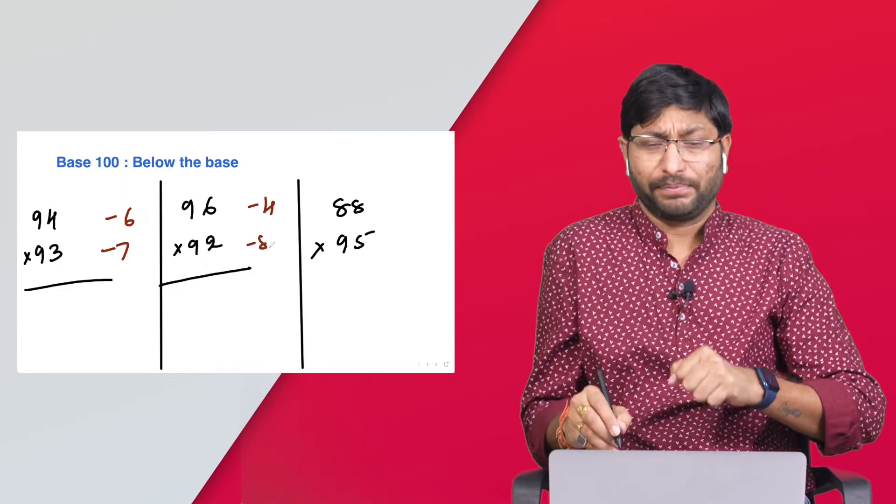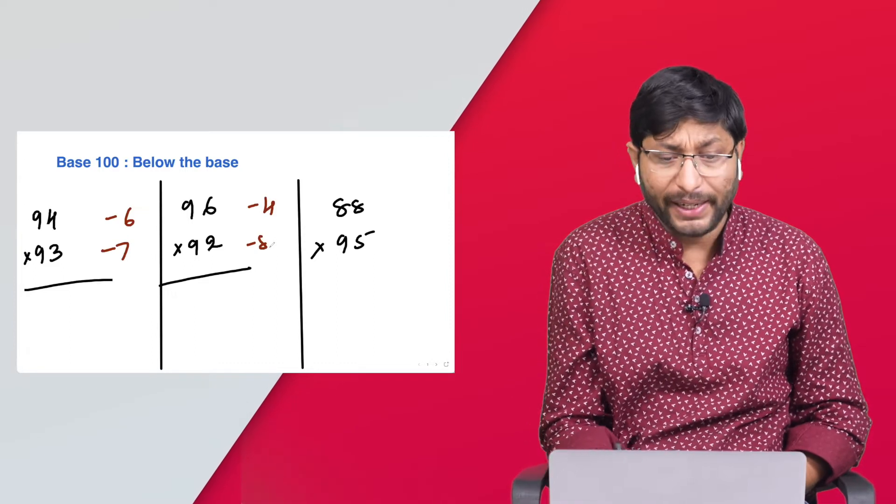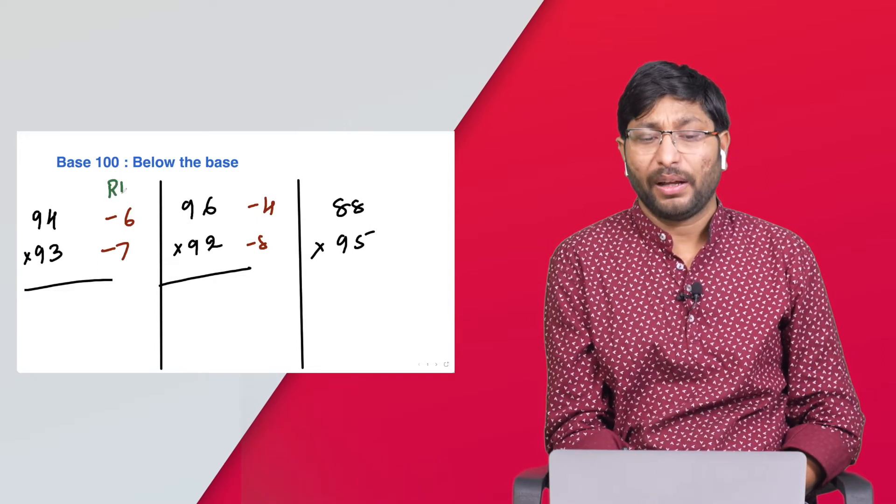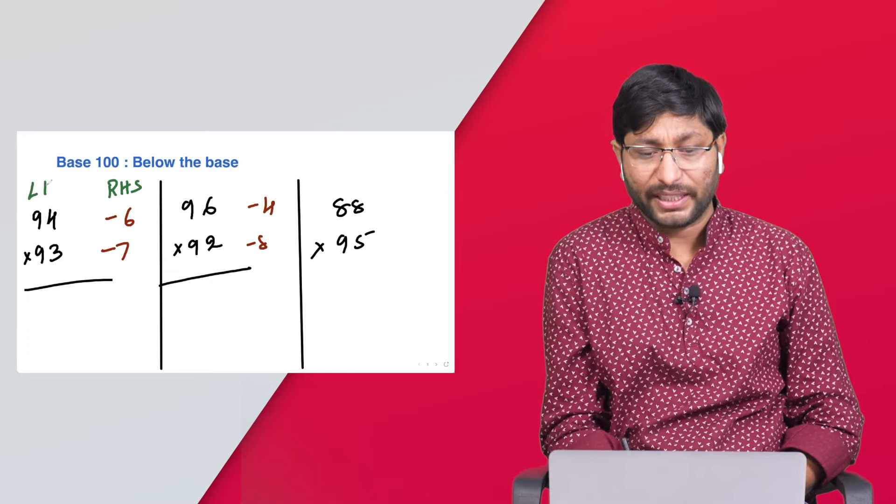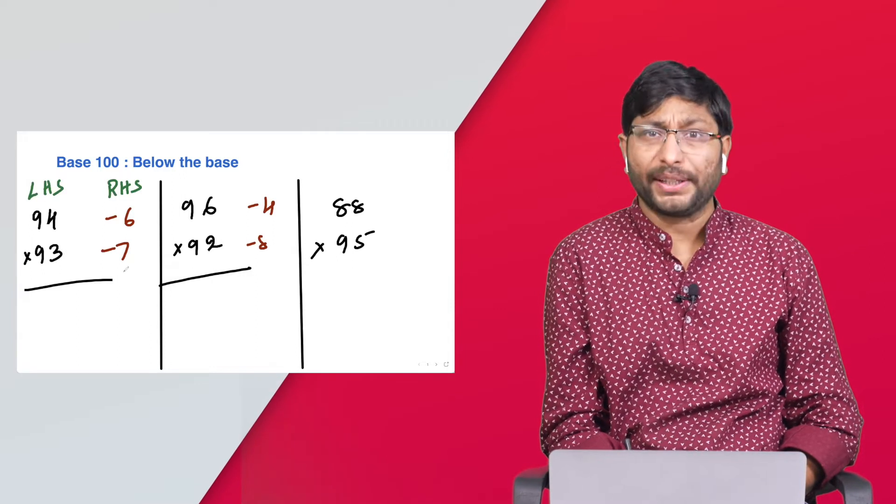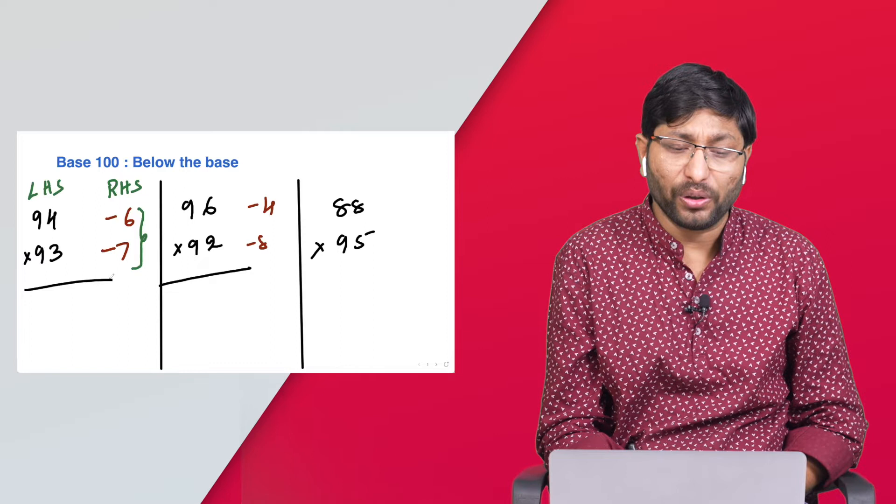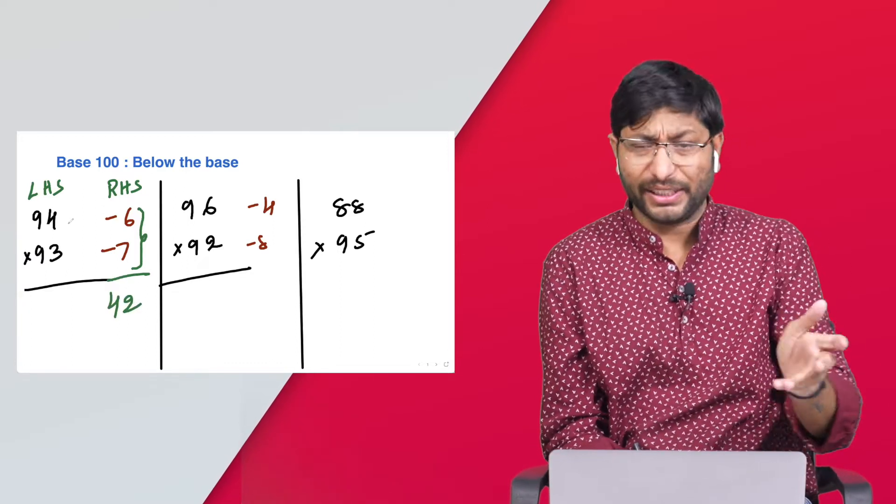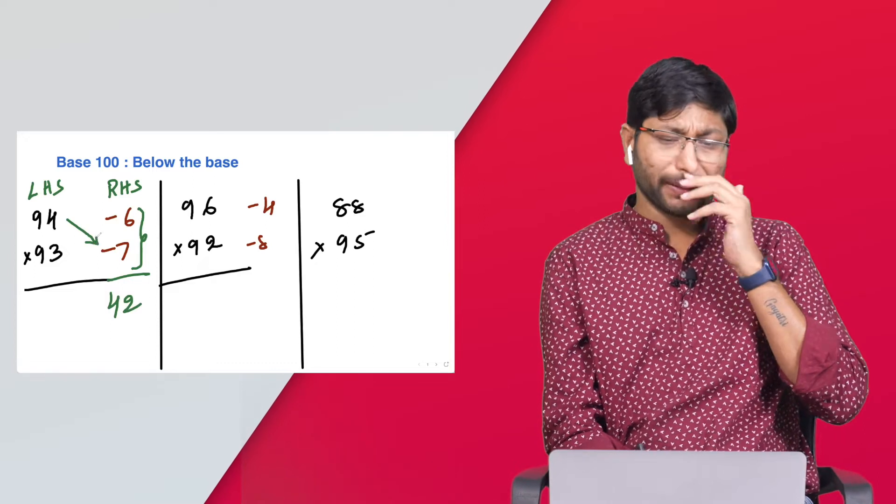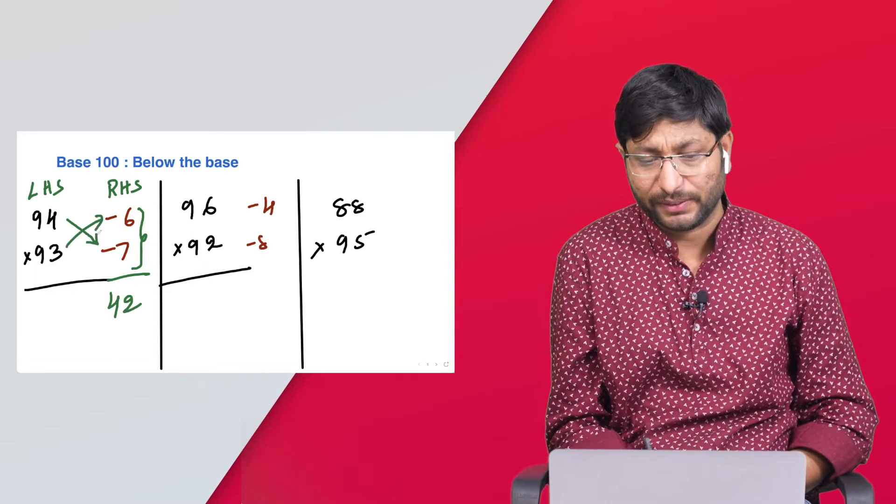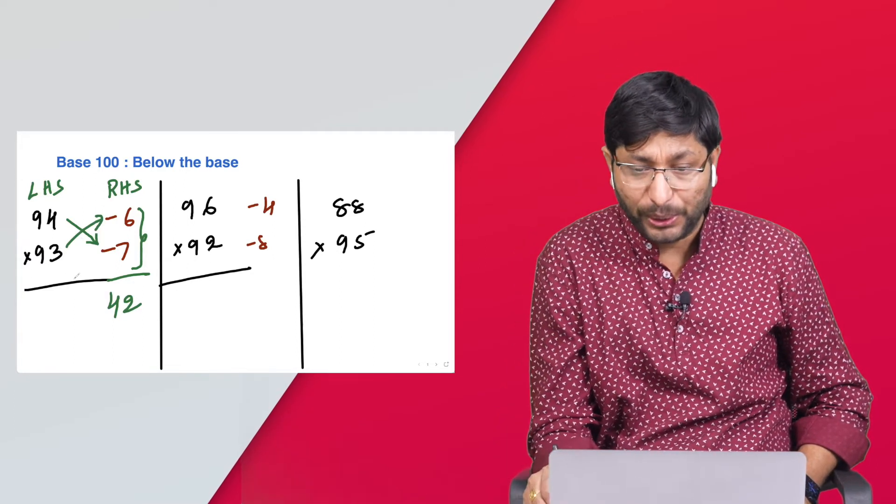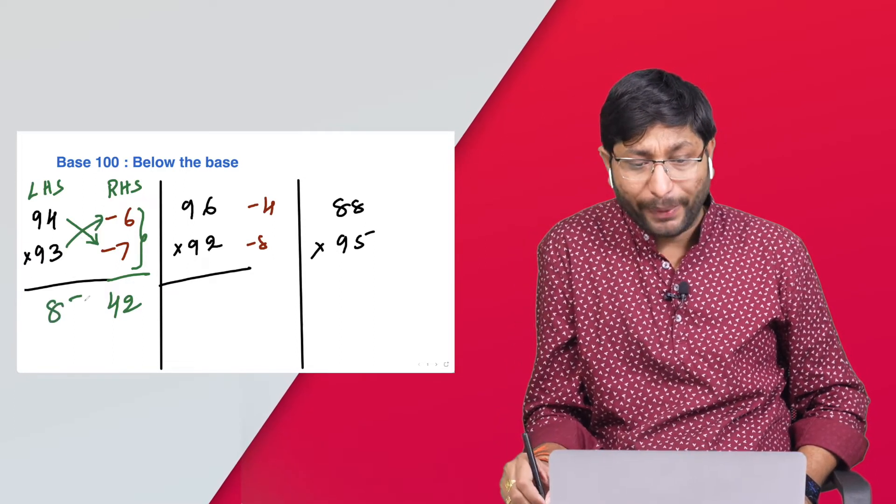100 minus 4 is 96. 100 minus 8 is 92. So as I mentioned, all the methods are similar but not the same. So take, similarly, right hand side and left hand side, and left hand side and right hand side. Multiply the right hand side: 6 times 7 is 42. Left hand side: 94 minus 7, or 93 minus 6, anything you can take. 94 minus 7 equals 87. How many steps we took? Observe how many steps we took here and how many steps we took there.